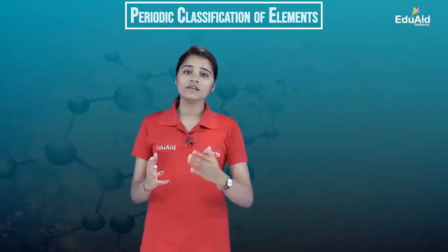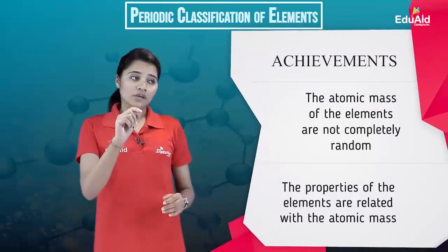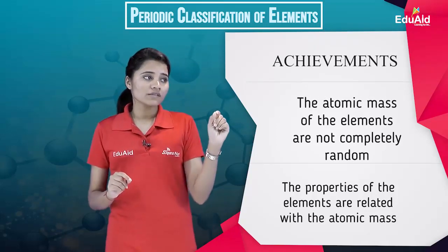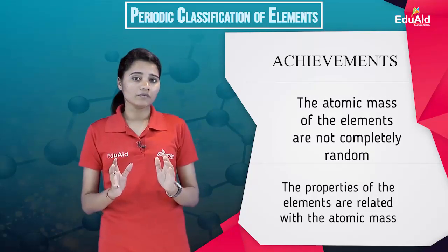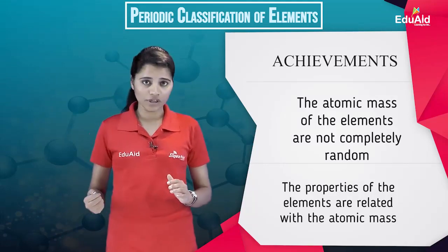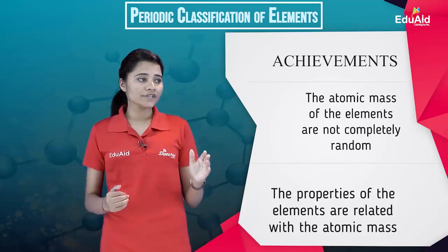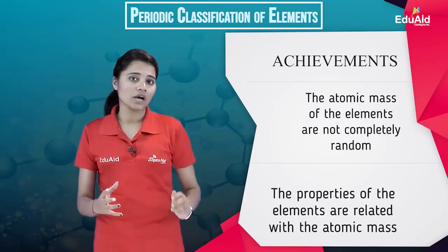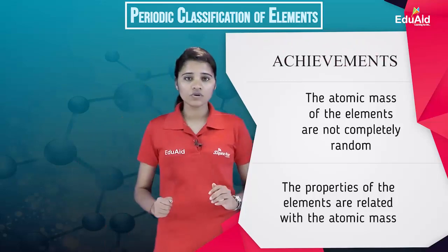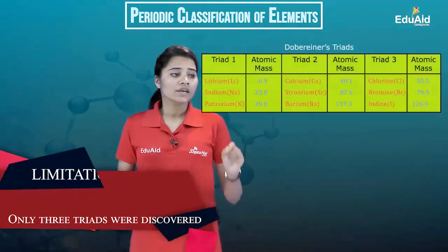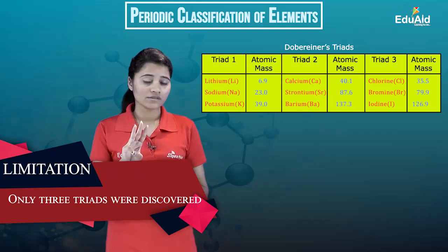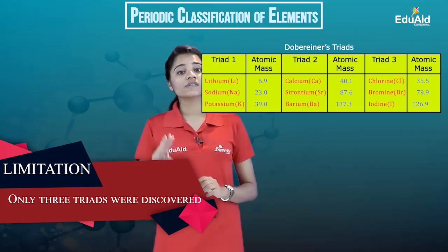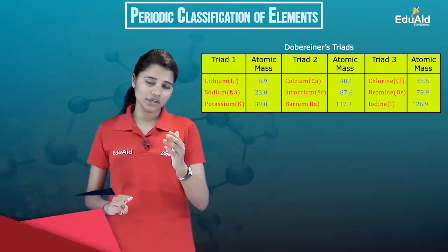There were some achievements and limitations. The achievement was that he was able to find that atomic masses are not completely random — they have some sort of relation. Also, he was able to show that properties of elements are related to atomic mass. The limitation was that he was able to find only three such triads out of the 56 elements known during his time.